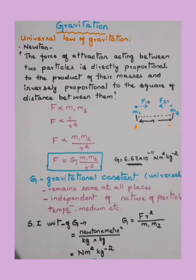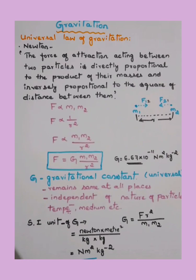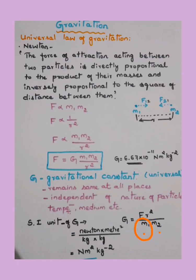For the SI unit of G, we use the relation G = F·R² / (M1·M2). The unit of F is Newton (N), the unit of distance R is meter, so R² is meter square. M1 and M2 are masses in kg, and kg × kg = kg². Taking kg² to the numerator gives kg⁻². Therefore, the SI unit of gravitational constant G is Newton meter square per kg square.